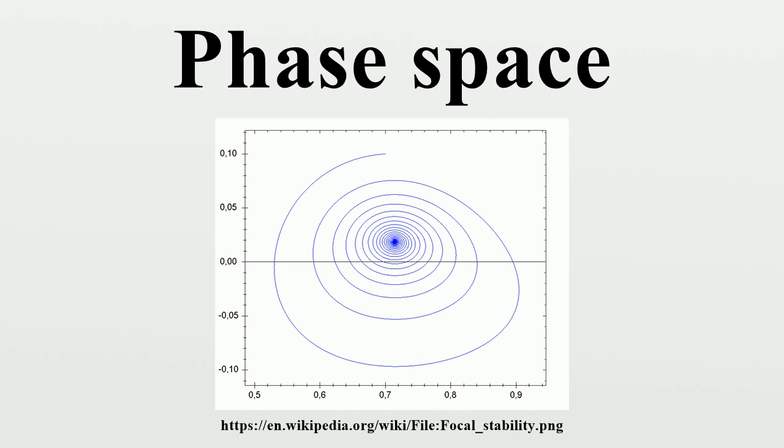Any choice of generalized coordinates qi for the position defines conjugate generalized momenta pi which together define coordinates on phase space.